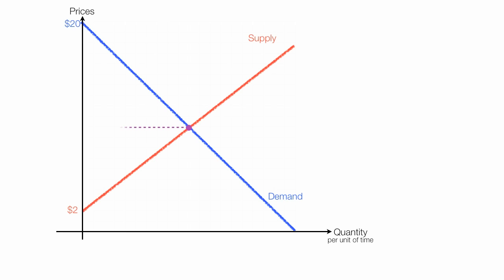In this case, the equilibrium price will be $10, and equilibrium quantity will be 10 units. At equilibrium, quantity is quantity demanded, and it's also equal to quantity supplied.